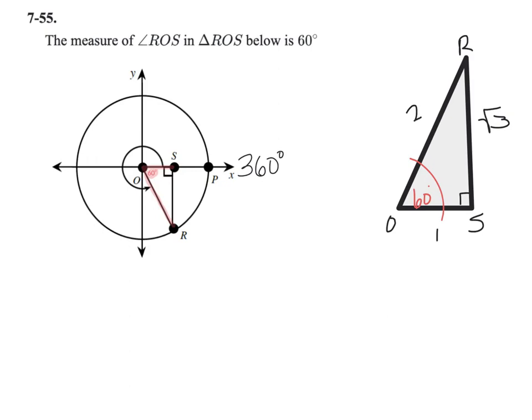I want you to notice the really important information right here is that angle ROS is 60 degrees. I've labeled that down here as 60 degrees, and since there are 360 degrees in a circle, it must have rotated through 300 degrees.